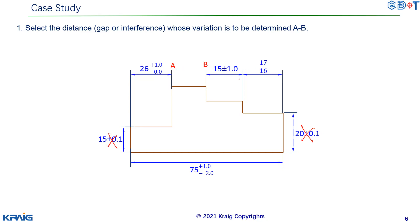All of these dimensions and tolerances have different impacts on A and B. For example, this one — 15 plus/minus 1.0 — if you make this dimension bigger, then A and B will be smaller. So we call this a negative dimension. And the next one, 75: if you increase this 75 to 76, then A and B will increase. So we call this positive. It is very important to assign the positive and negative property, because we are going to use this in the tolerance stack-up forms.